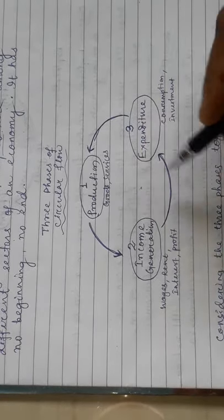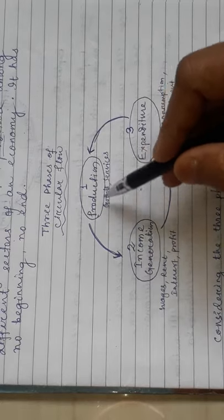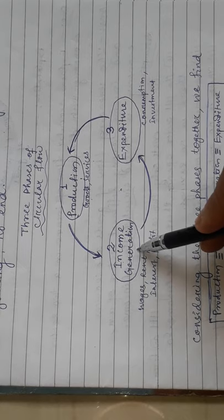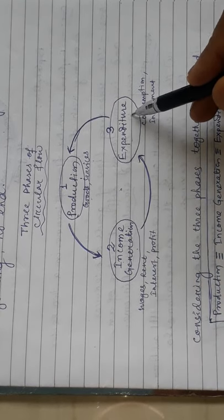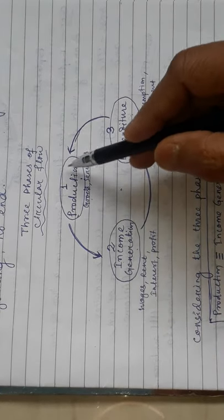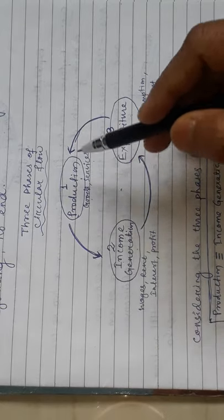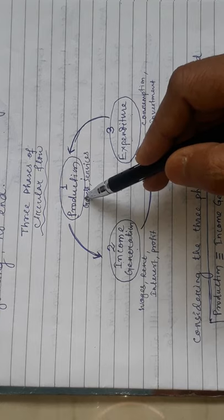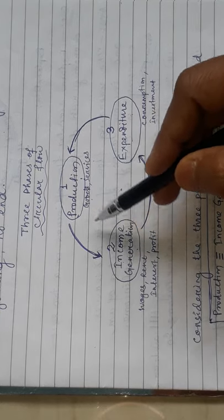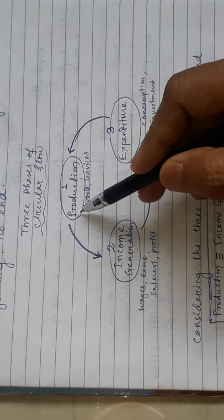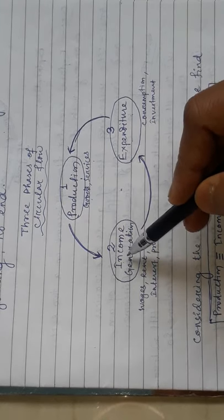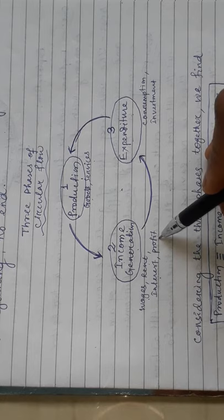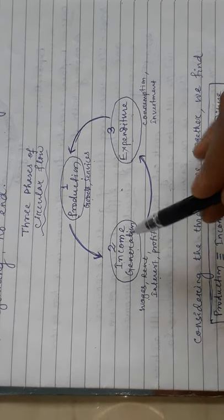Let us understand this with a diagram. The first activity is production of goods and services. If a firm sector is producing goods and services, then factors of production will be hired or purchased. Those who provide factors will earn income in the form of wages, rent, interest, or profit. So income generation is also known as distribution of income.